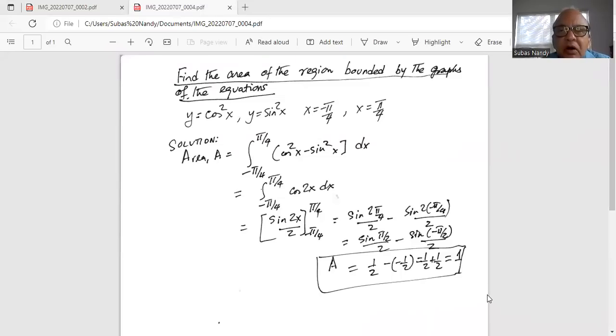Find the area of the region bounded by the graphs of the equation, y equal to cosine square x and y equal to sine square x. The limits of x are from minus pi over 4 to x equal to pi over 4.